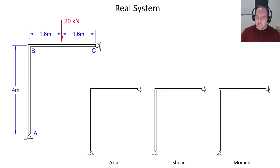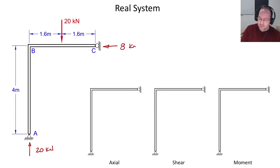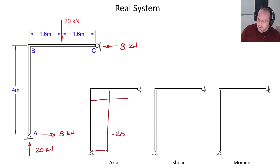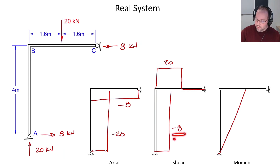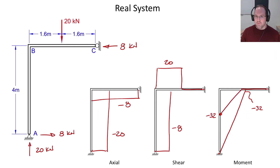Starting with the real system, we calculate reaction forces. There is a 20 kilonewton upward reaction at A. Summing moments about A gives a horizontal reaction at C of 8 kilonewtons, and summing forces in the x-direction gives 8 kilonewtons at A as well. For the axial force diagram, the column is in compression at negative 20 kilonewtons and the beam is in compression at negative 8 kilonewtons. For shear, the column has a shear of negative 8 and the beam has a shear of positive 20, dropping to zero after the concentrated load is applied. For the moment diagram, multiplying 8 by the 4-meter column height gives negative 32 kilonewton-meters at the corner, which then decreases rapidly to zero along the beam.